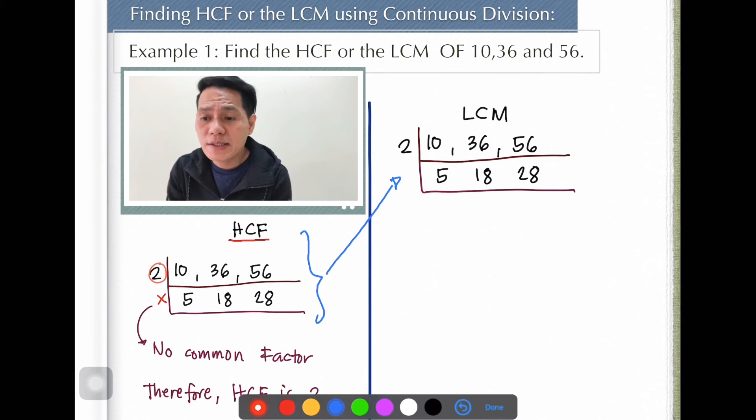Now, the next thing here is we have to continue doing the process. There are three numbers involved. Yes, there is no more common among the three. But in LCM, we can do that. We can break the rules in finding out the LCM. We can continue if we can pair the numbers here.